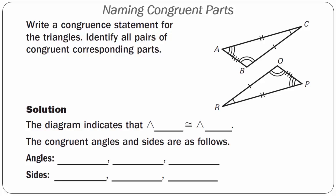Example one: naming congruent parts. Write a congruent statement for the triangles and identify all pairs of congruent corresponding parts.